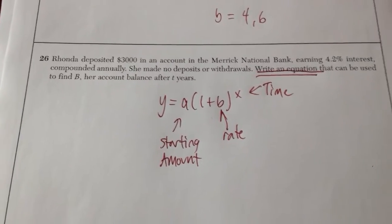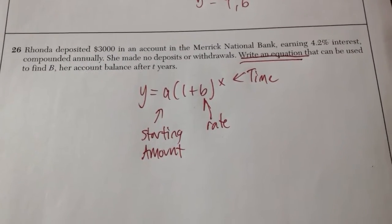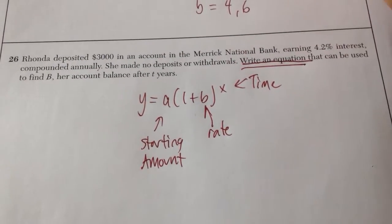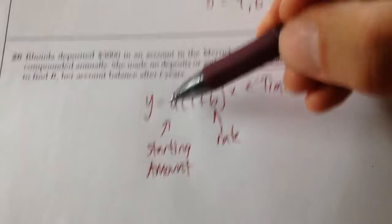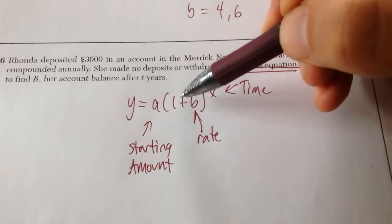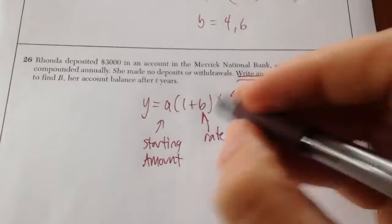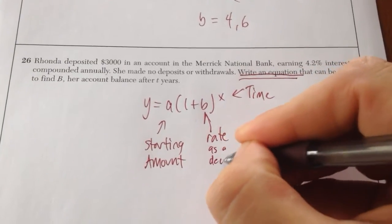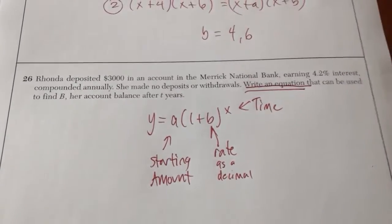In number 26, it says Rhonda deposited $3,000 in an account. Anytime you're talking about savings account, you should think about this formula. This is the exponential growth formula, where a is the starting amount. We're going to do 1 plus our rate as a decimal. And then the exponent is time.